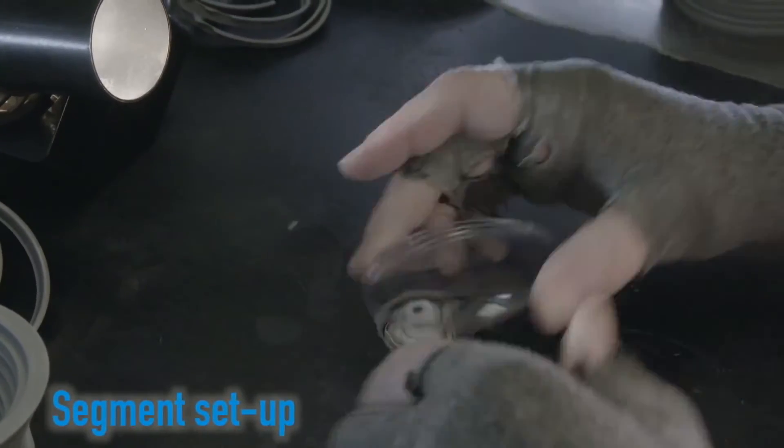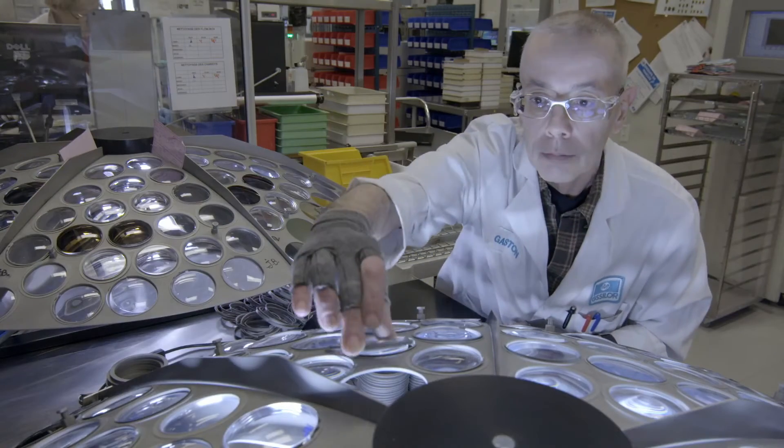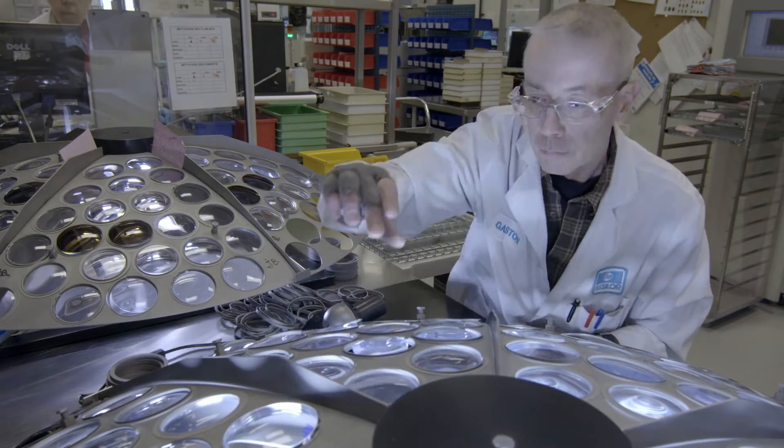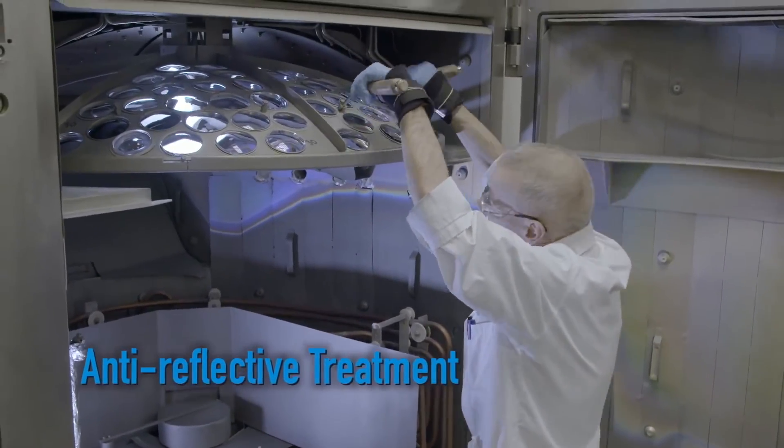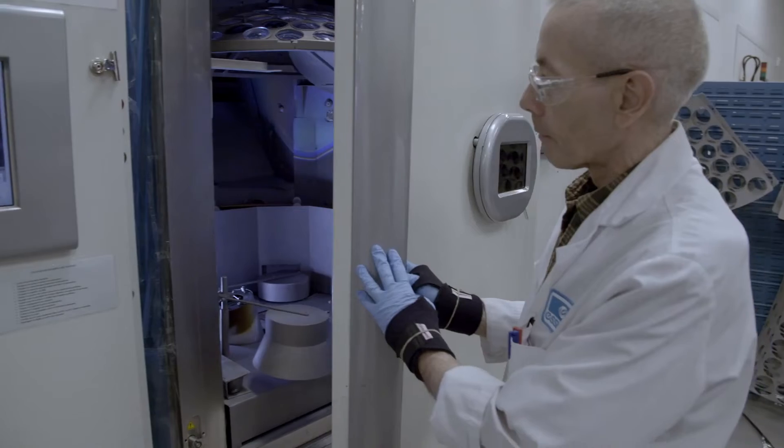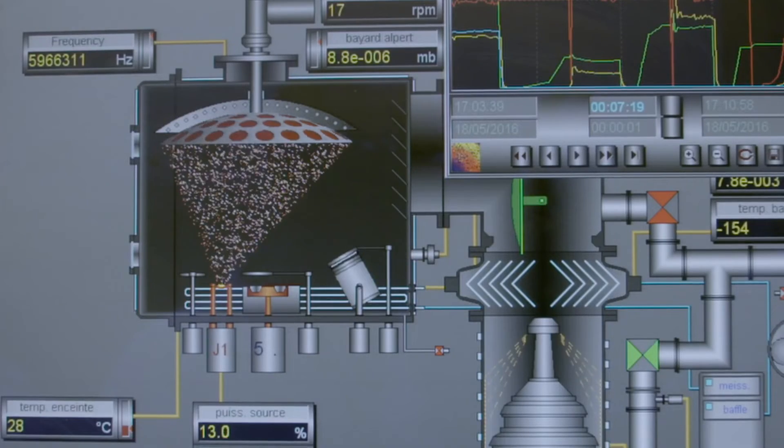Upon exiting the curing oven, the lenses are cleaned and placed on sectors. These sectors are installed in a vacuum chamber to apply the anti-reflective coating on the lenses. This chemical sublimation treatment by thin layer is applied on each surface of the lens.